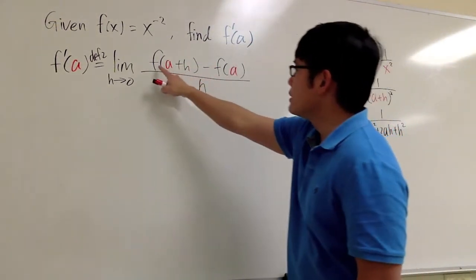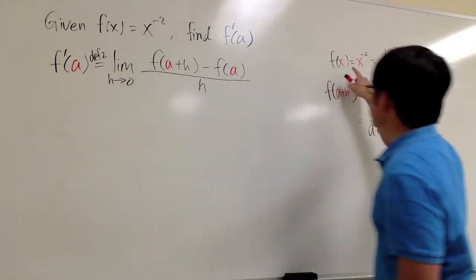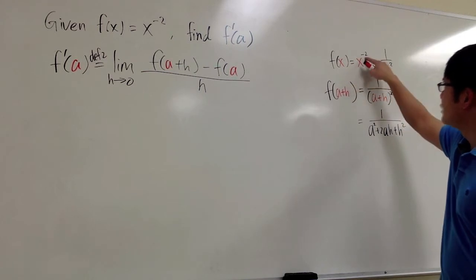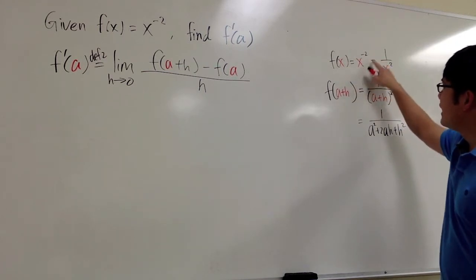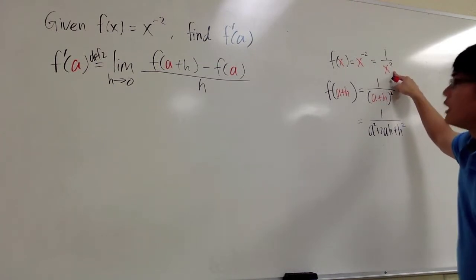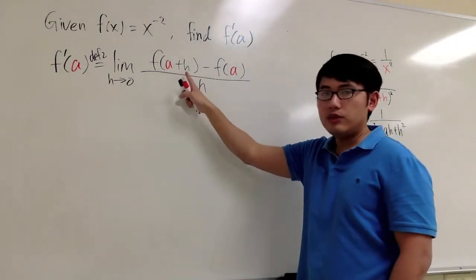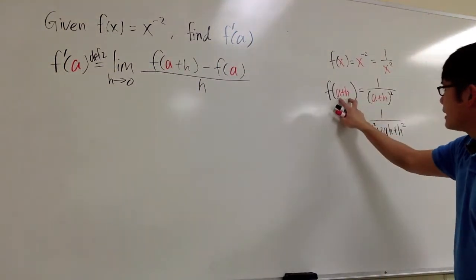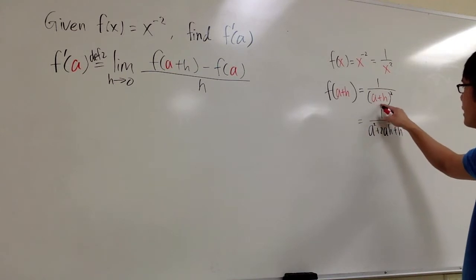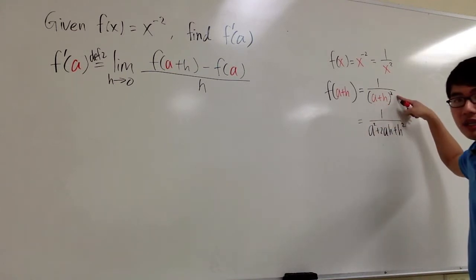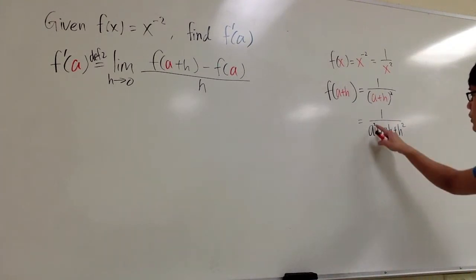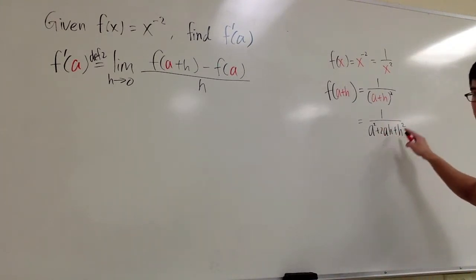First, we need to figure out what f of a plus h is. We know f of x equals x to the negative 2 power, which we can rewrite as 1 over x squared. To get f of a plus h, we plug in a plus h for x, giving us 1 over the quantity a plus h squared. Expanding the denominator, a plus h times a plus h gives us a squared plus 2ah plus h squared.